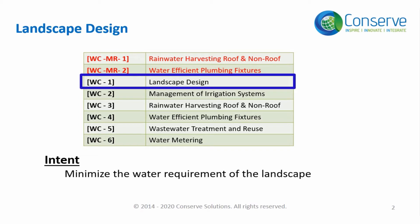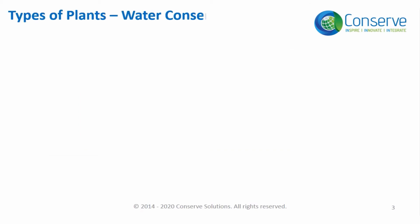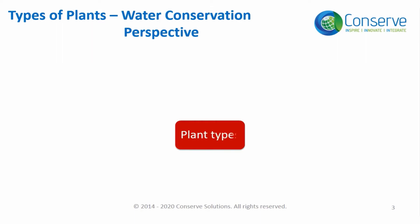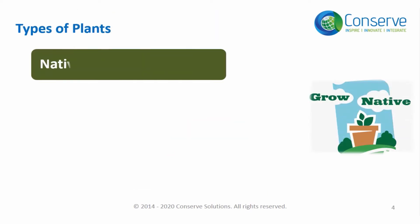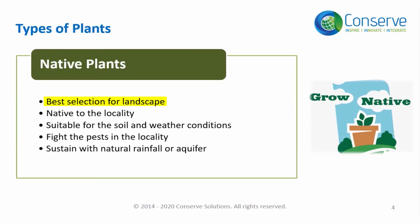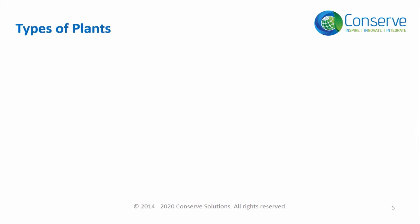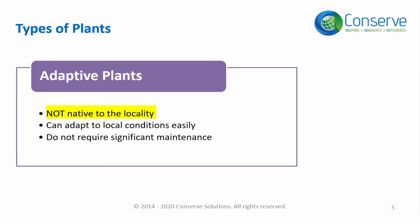From a water conservation perspective, plants can be classified as native plants, adaptive plants, and invasive plants. Native plants, as the name implies, are native to the locality and they are the best selections for the landscape, as they can sustain without significant maintenance.